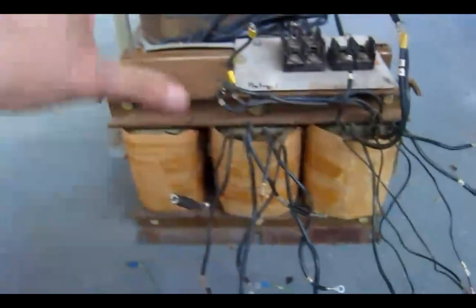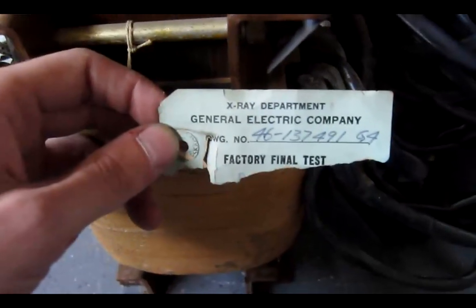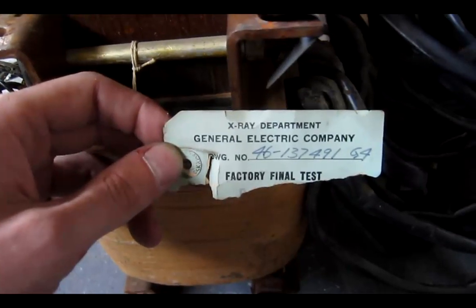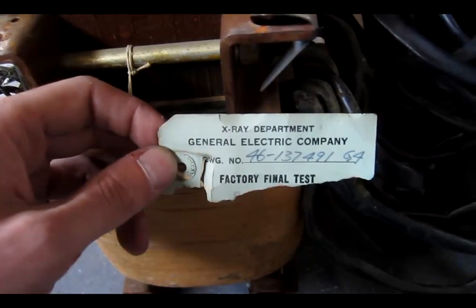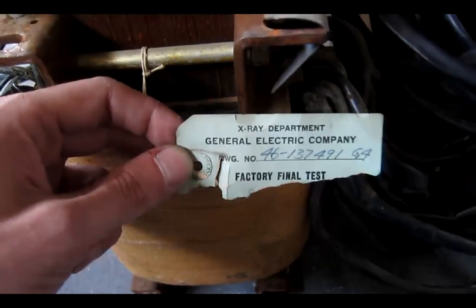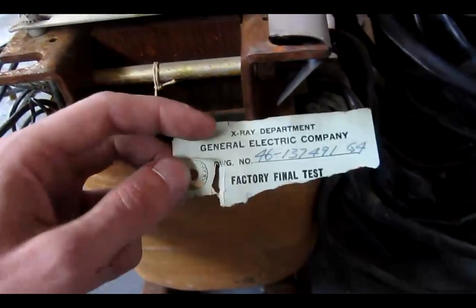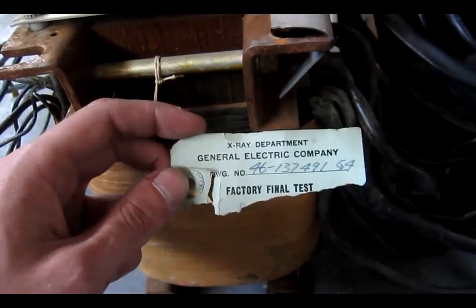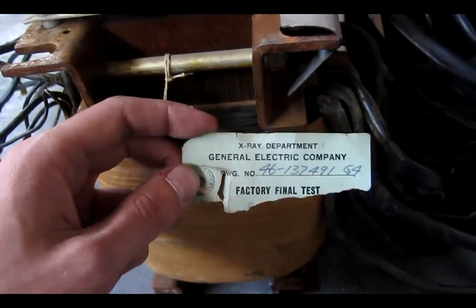I need to know exactly what this is and we have a clue. The clue we have is X-ray Department, General Electric Company, 46-137491 G4. Now that's your clue and it came from the factory. We know that this is from General Electric brand x-ray medical equipment.